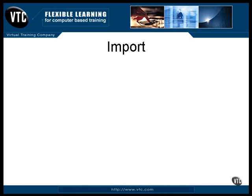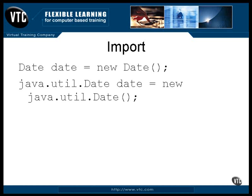What it does is resolve some short names into long ones. For example, say you have this line of code in your program, but nowhere in your program or in the local directory do you have a definition for the class named Date. That means that this line won't compile. Now there are two things you can do to fix this. You could just use the full name of the class every time you refer to it, like this. That works, and some folks prefer to do it that way.